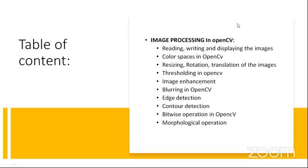We will cover differentiating image colors in our stages. So for image processing, we will mainly talk about the image processing part in OpenCV: how to read the image, how to write it, what are the color spaces, what is resizing and rotation, how we can do it, what is the necessity of resizing and rotation, what is thresholding, image enhancement, blurring, edge detection, contour detection, bitwise operations, and morphological operations. At the end of the session, we will cover two applications of OpenCV: face detection, and road lane detection, which is used in self-driving cars.